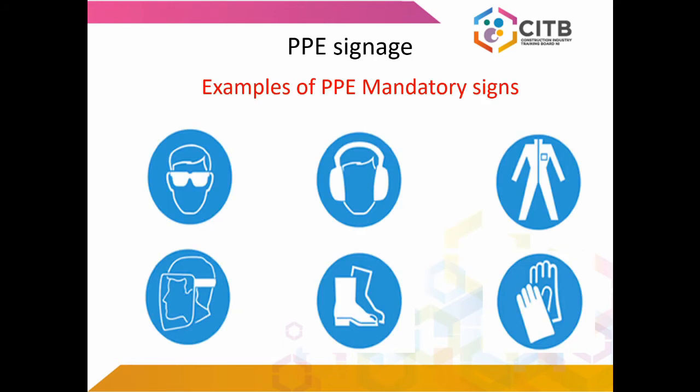This slide shows examples of PPE mandatory signs. Firstly, eye protection. Secondly, ear protection. Thirdly, suitable clothing. Four, different types of eye protection. Five, safety boots, and six, safety gloves.